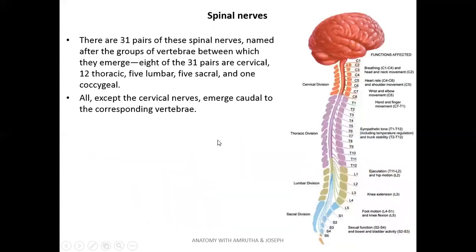Spinal nerves are the nerves emerging from the spinal cord — 31 pairs in total, named cervical, thoracic, lumbar, sacral, and coccygeal. There are 8 cervical, 12 thoracic, 5 lumbar, 5 sacral, and 1 coccygeal spinal nerve. They are paired structures.